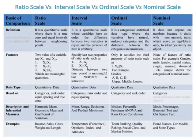The definition of ordinal scale is that it is a categorical statistical data type where the variables have natural ordered categories and the distances between the categories are unknown, while the definition of nominal scale is that it does not depend on number because it deals with non-numeric traits which serve as tags or labels only to identify or classify an object.